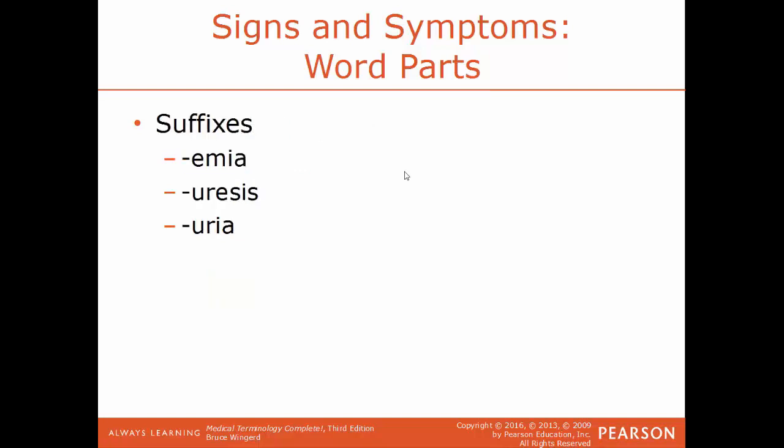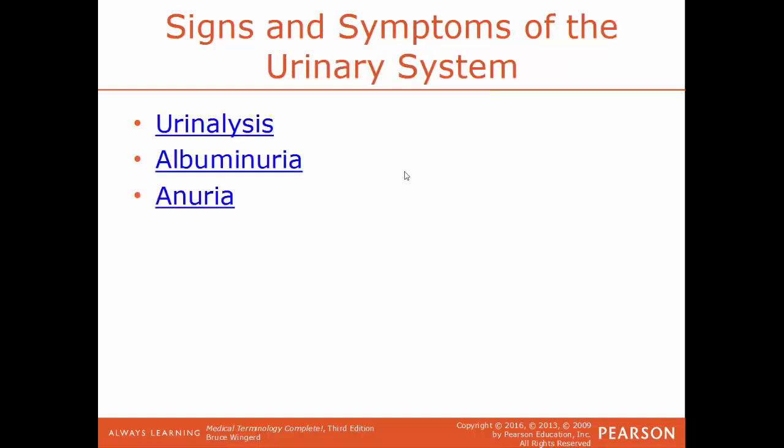Some common suffixes regarding the system: emia means of the blood; uresis means urination; and urea means a condition of urine or urination.